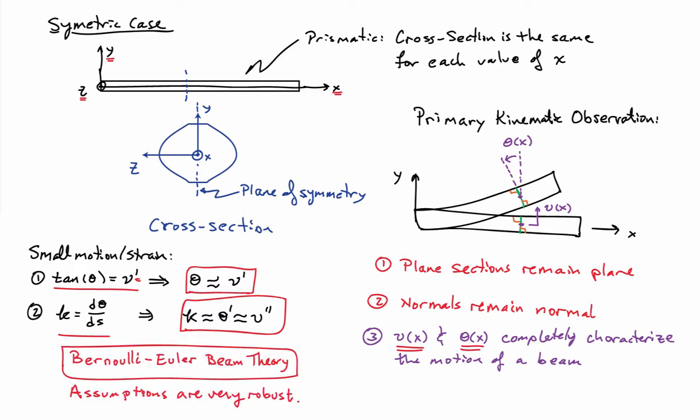The theory we're going to describe is known as Bernoulli-Euler beam theory. That is what people mean when they say Bernoulli-Euler beam theory: the bending of beams where plane sections remain plane and normals remain normal. These kinematic assumptions are extremely robust — they hold for standard metals in the elastic regime, elastomers, and even when deformation is plastic, where you really bend it a lot, plane sections still remain plane. Even for composite cross-sections, these observations hold to very good approximation, making this theory extremely robust.